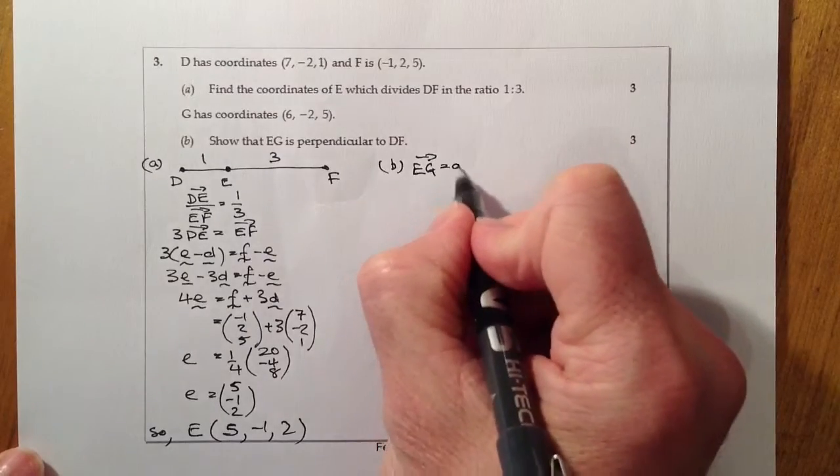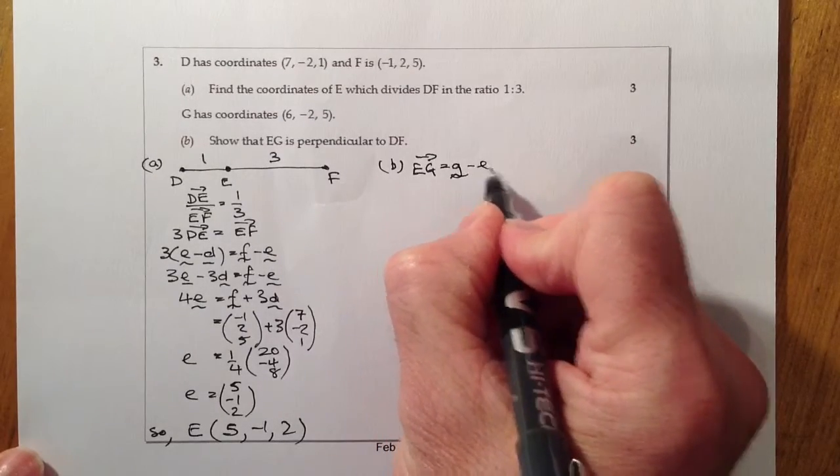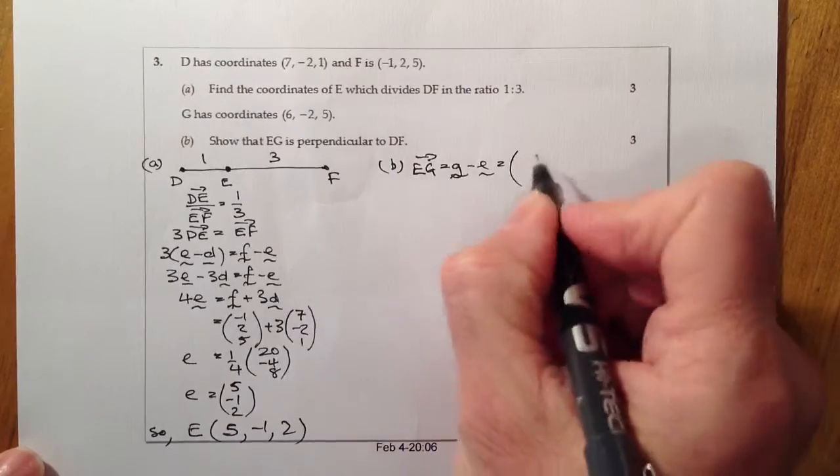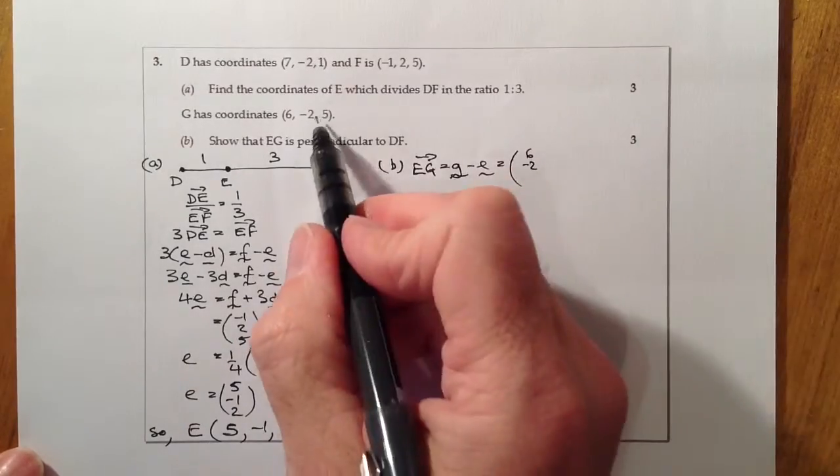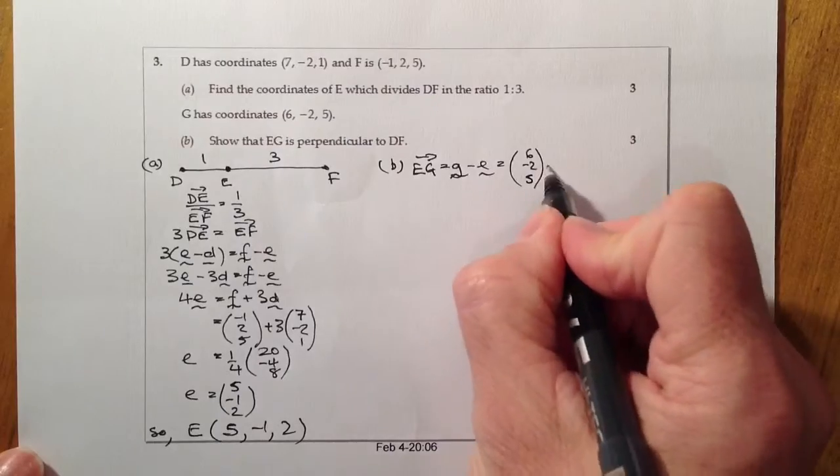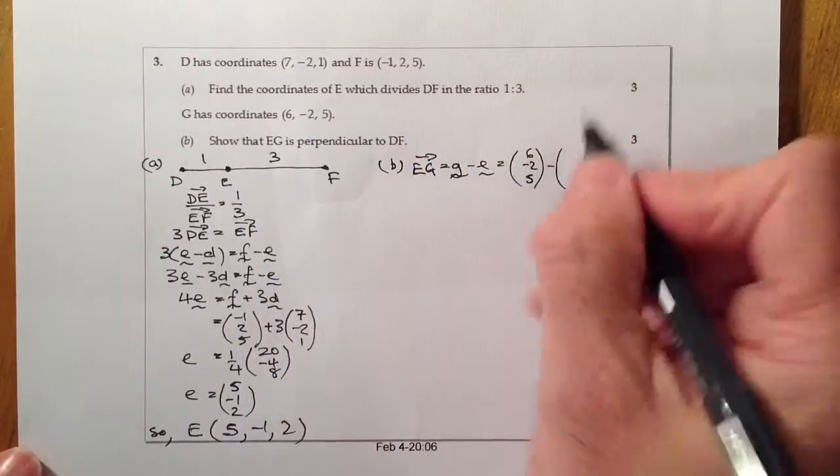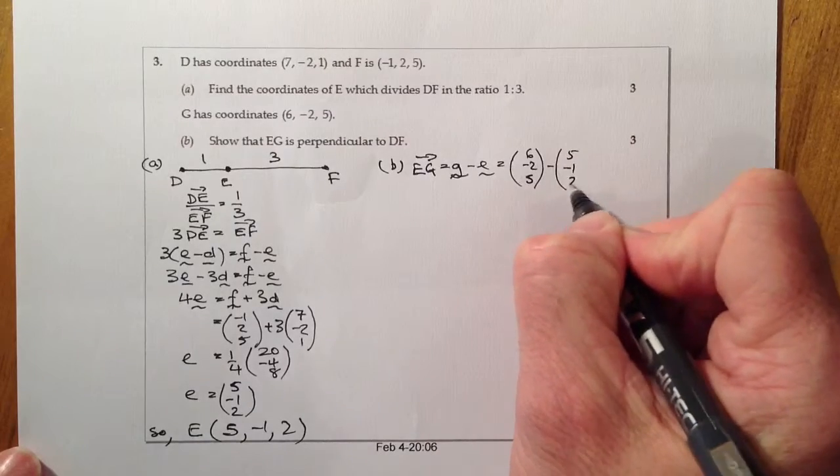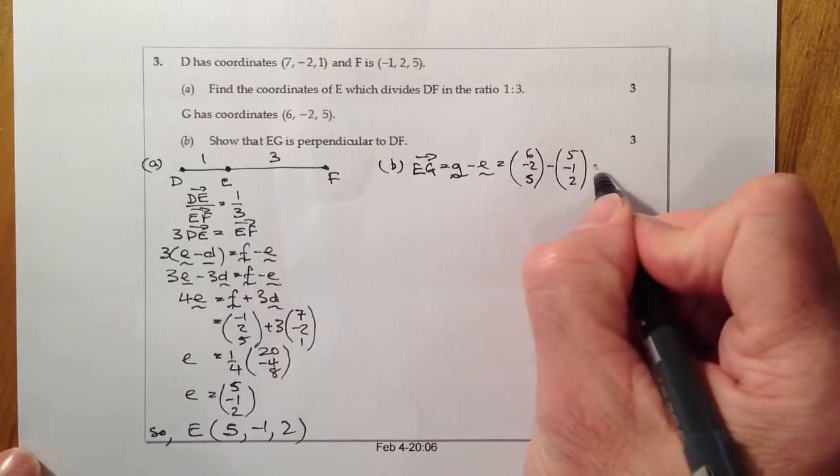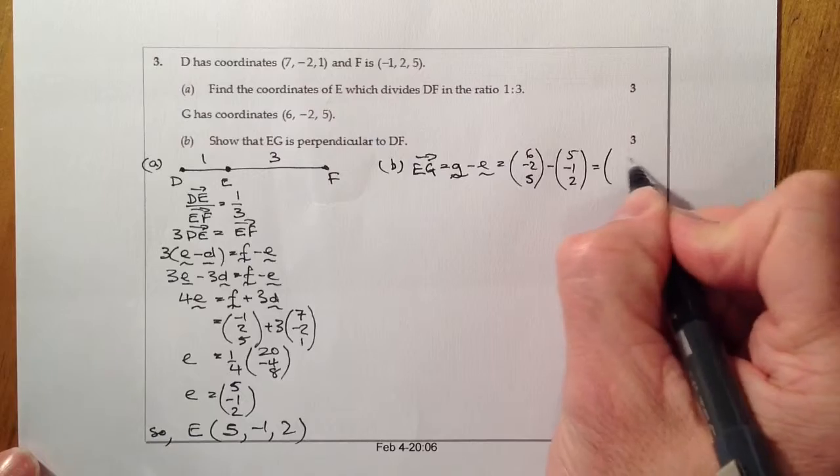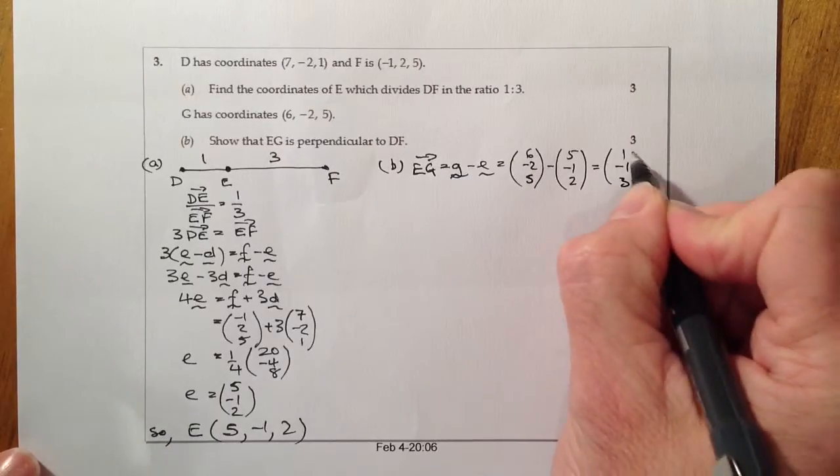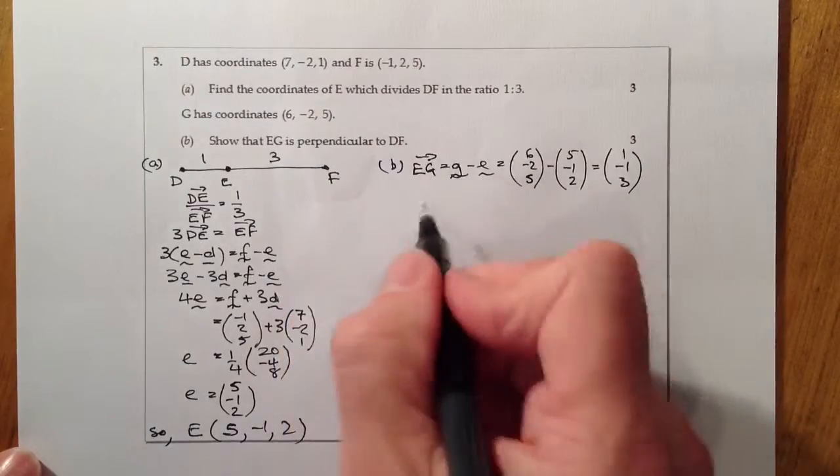Let's do EG first. That's G minus E. Firing in the values: (6, -2, 5) minus (5, -1, 2), which equals (1, -1, 3).